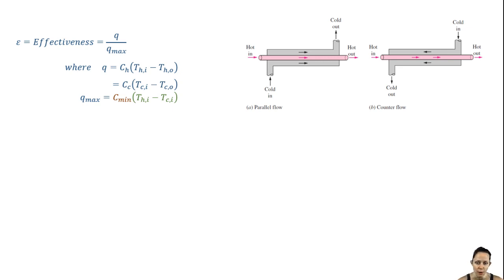This would represent the largest driving force for heat transfer. The C min is the minimum of the two heat capacity rates. The C min is the limiting factor.